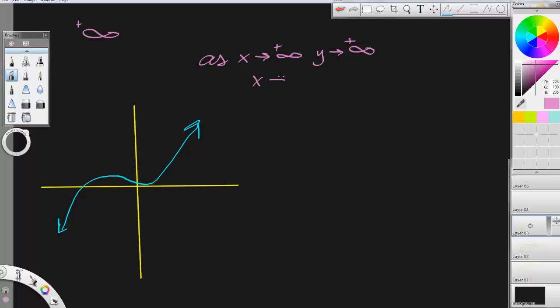As I move to the left, the graph goes down forever. So as I go this way, the graph goes down. Negative infinity.